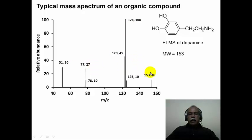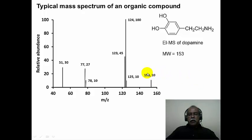The molecular weight of this particular compound — dopamine, one of the neurotransmitters — is 153. The molecular ion is registered at the highest m/z value of 153, but it is not the most intense ion, because the molecular ion further undergoes decomposition and fragmentation to give various other ions. In fact, one of the fragment ions is the most abundant ion at 100% intensity in the mass spectrum.